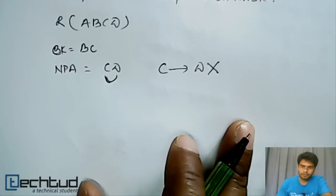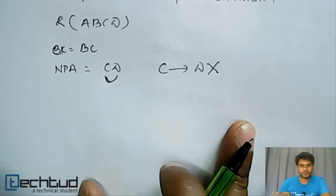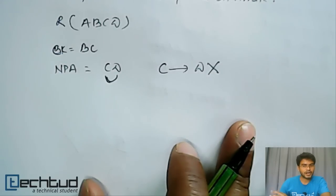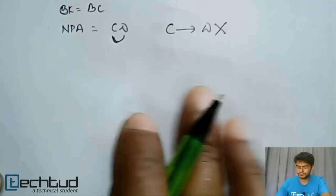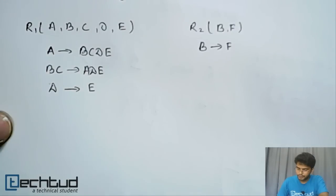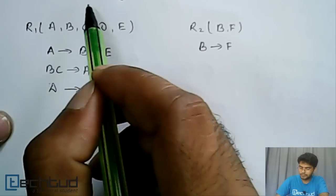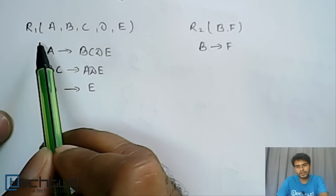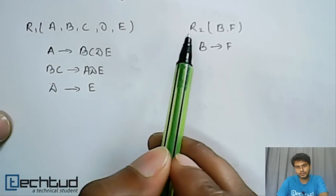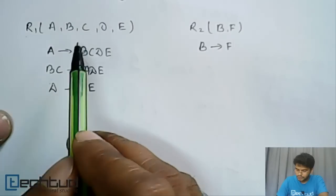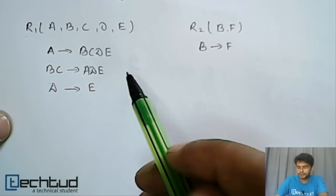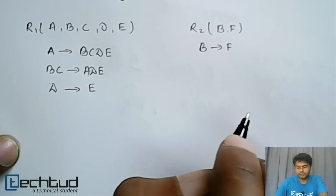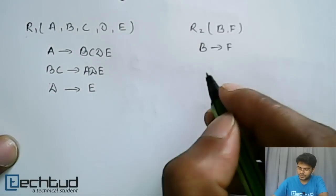To better understand this, we will take our previous example and check whether the relations R1 and R2, derived after decomposition of the original relation, are in third normal form. While studying second normal form, we broke the original relation R into two new relations R1 and R2. Now we have to see whether R1 and R2 are in third normal form. They are already in second normal form, so let's proceed with checking the third normal form condition, starting with R2.